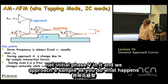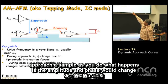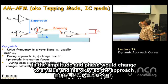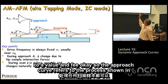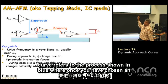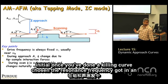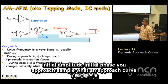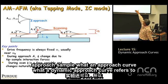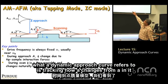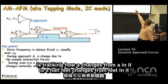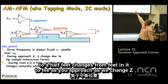As you approach the sample, the amplitude and phase change to values A and φ. The dynamic approach curve refers to tracking how A changes from A_init to A, and how φ changes from φ_init to φ, as you decrease the Z separation along the approach direction.